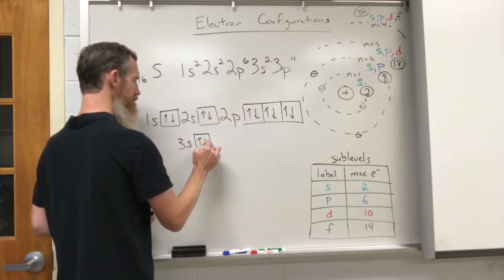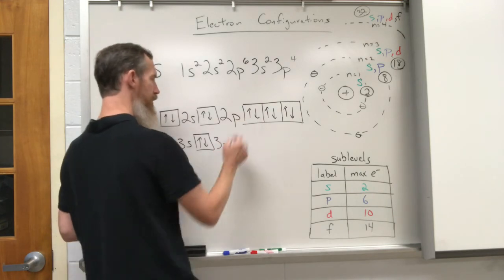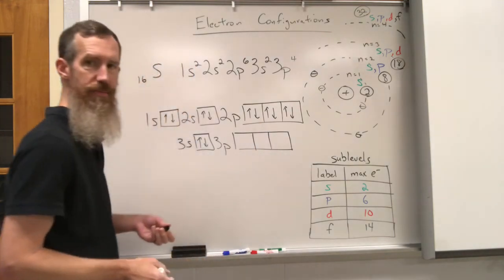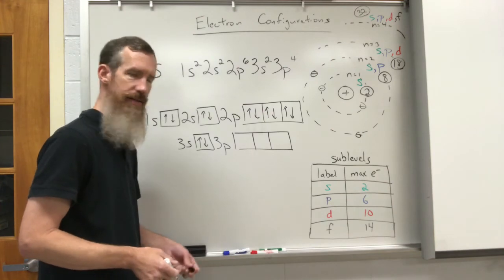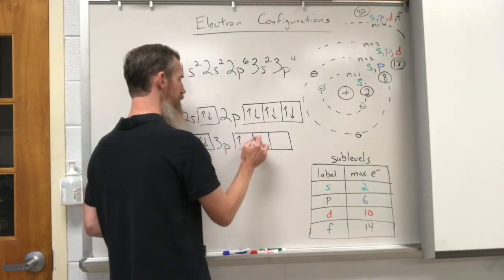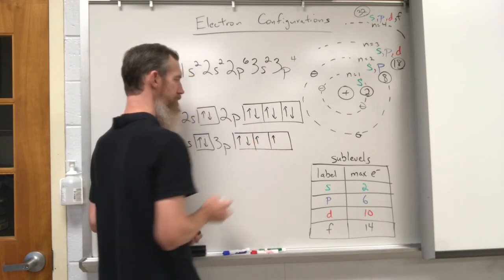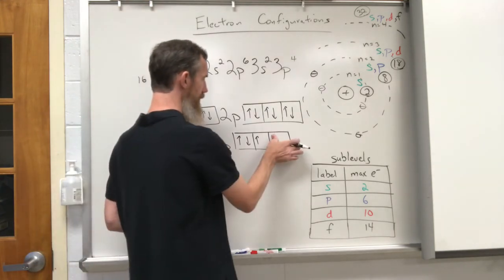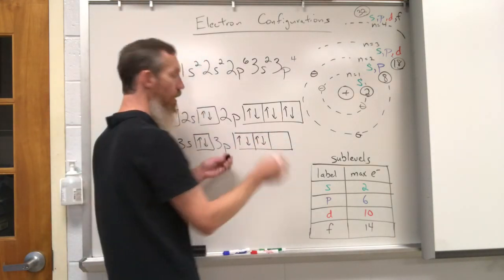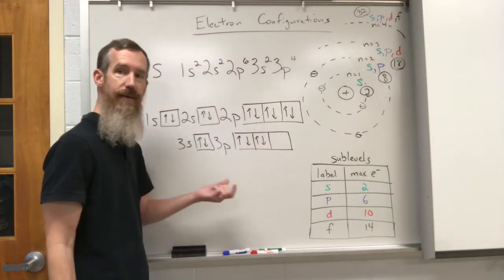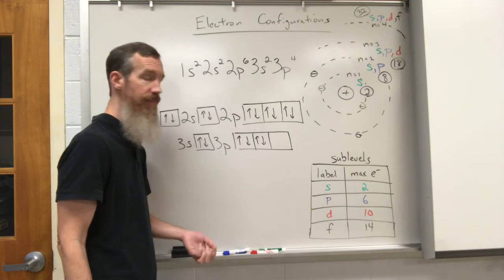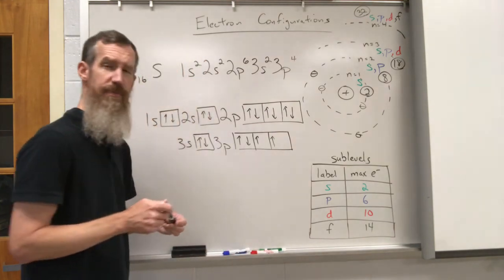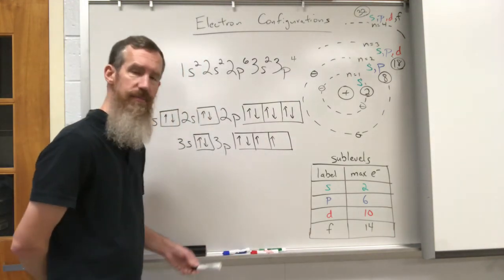For 3s: up and down. For 3p: I have four electrons to place, but I must draw the entire sub-level — all three orbitals that can hold six electrons. The order is: up arrow, up arrow, up arrow, then down arrow. If you draw up, down, up, down instead, that is wrong. All upward spins must be filled before any downward spins fill in that sub-level.